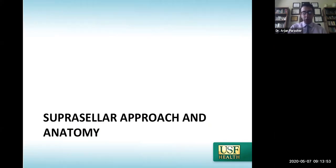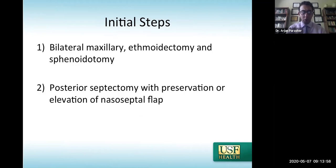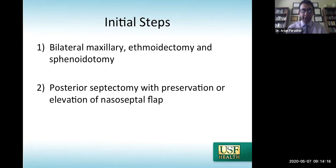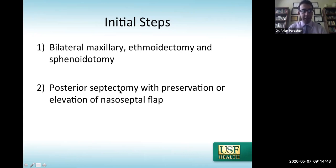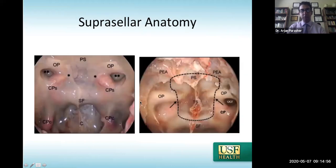For a suprasellar approach, we do a bit more than the standard sellar approach. Rather than just pushing turbinates aside, for expanded approaches I do a bilateral maxillary ethmoidectomy and sphenoidotomy to create room, resect the middle turbinate as needed based on pathology, then perform the nasal septal rescue flap or full flap elevation with posterior septectomy—the same steps as the sellar approach with the addition of the maxillary ethmoidectomy and sphenoidotomy.